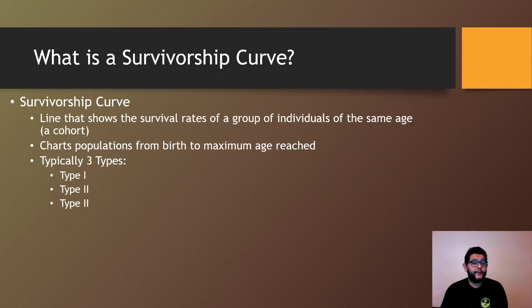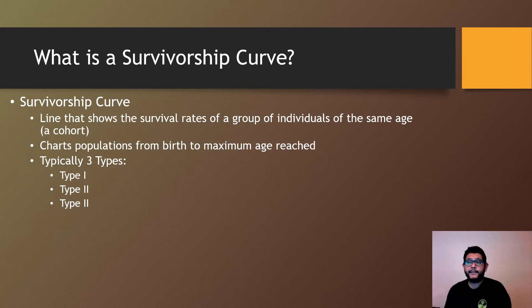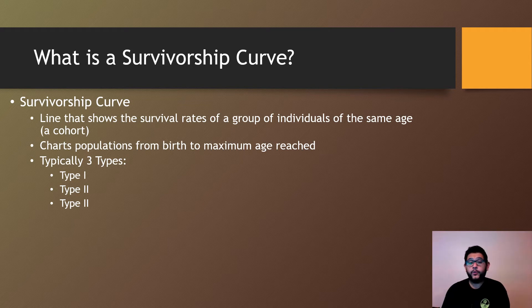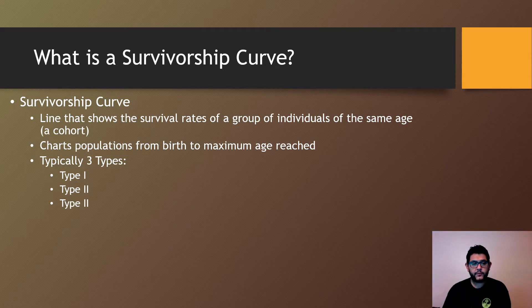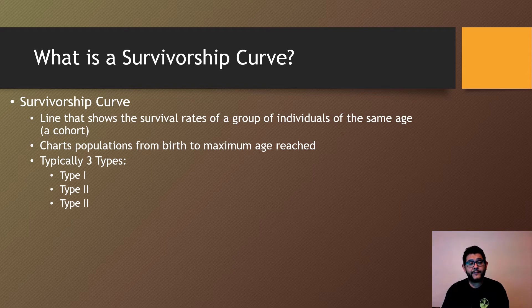So what is a survivorship curve? Basically, it's a graph that shows the different lines with the survival rates of different groups of individuals of the same age or a cohort. It charts populations from birth to the maximum age they reach to death and classifies them into three types.